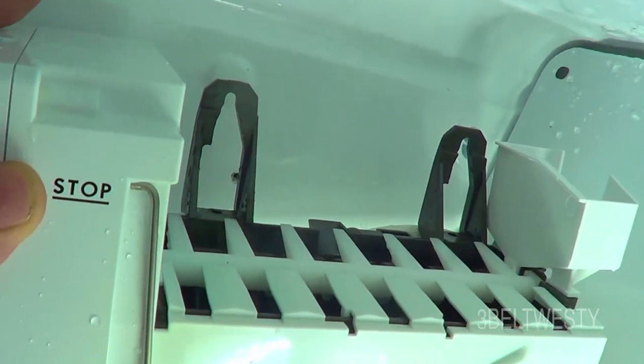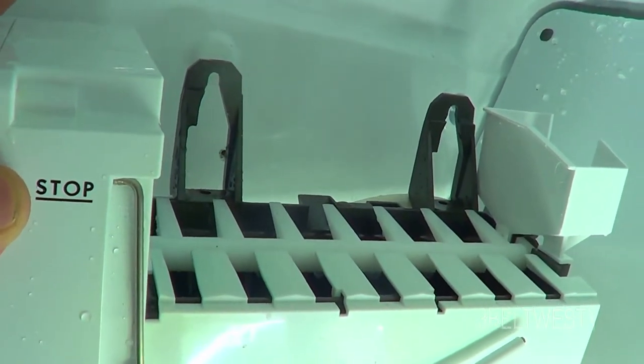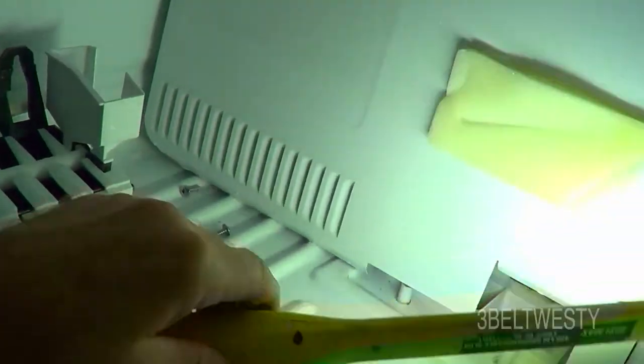But to take this off, you have to undo the ice maker. So you've got a Phillips head screw held on either side. And then I pulled this aside.